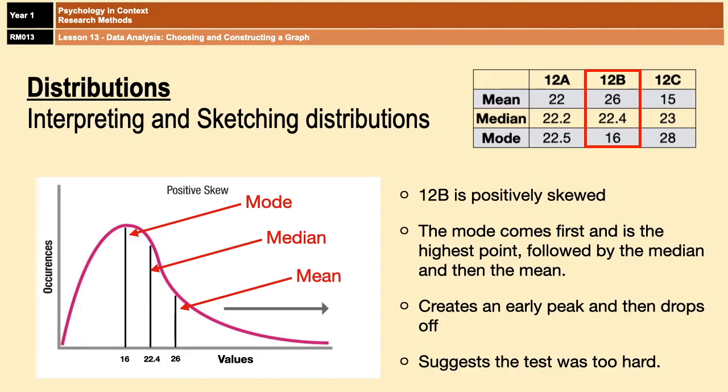That tells us that 12B found the exam too hard because the majority of scores were low, with just a couple of scores being quite high, which are the extraneous scores which are pulling the mean to the right. Because, like I said before, the mean is affected by extreme results. So this results in a positively skewed distribution.